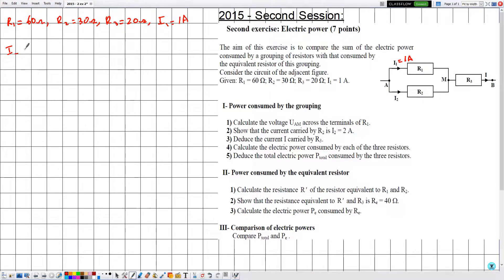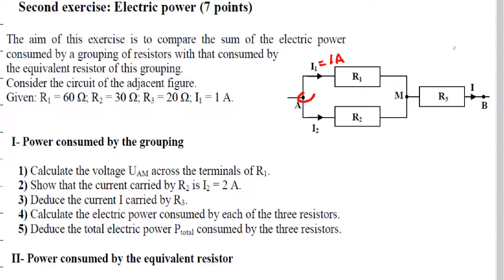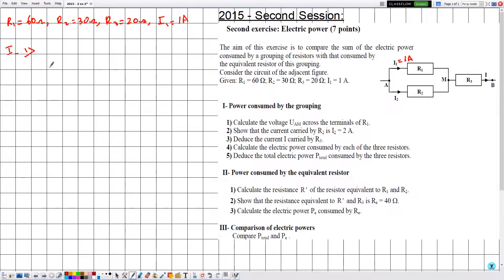Part one of this exercise: power consumed by the grouping. Number one — calculate the voltage UAM across the terminals of R1. We need to calculate UAM knowing that we have the traverse current of 1 ampere and the resistance R1 equal to 60 ohms. Using Ohm's law, let's apply Ohm's law to R1. Always in physics we need to mention the law that we are using.